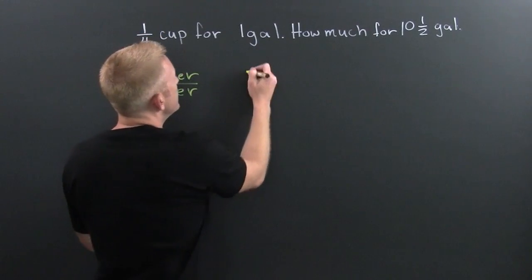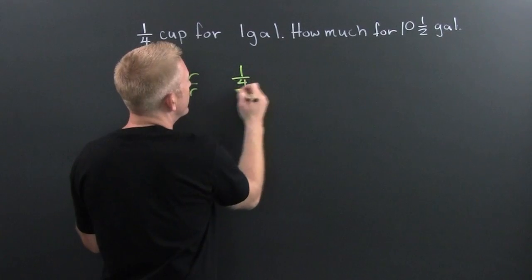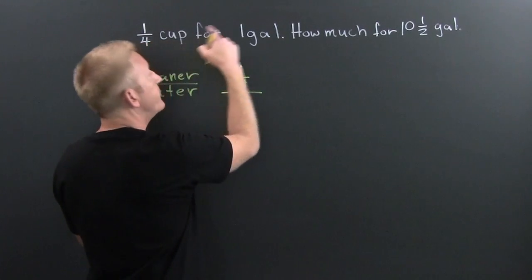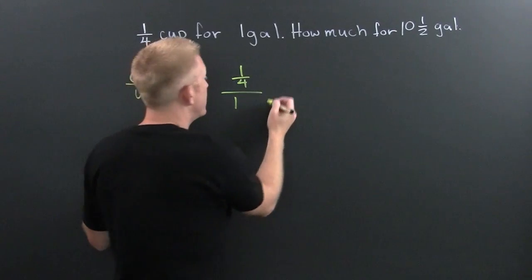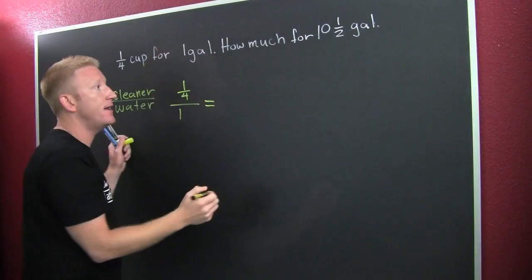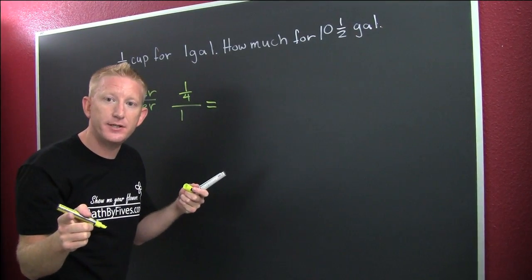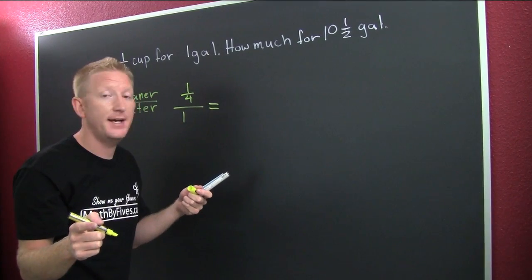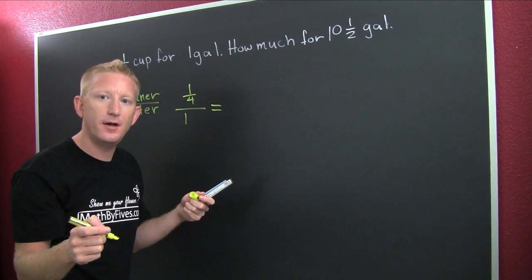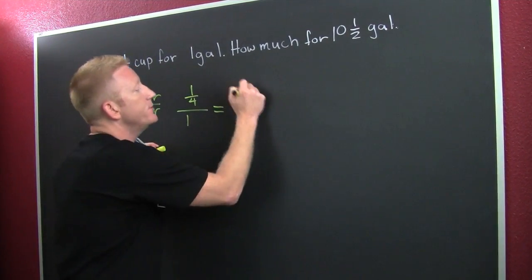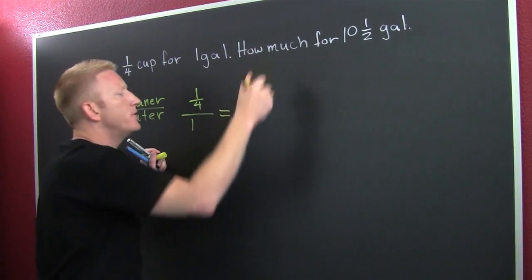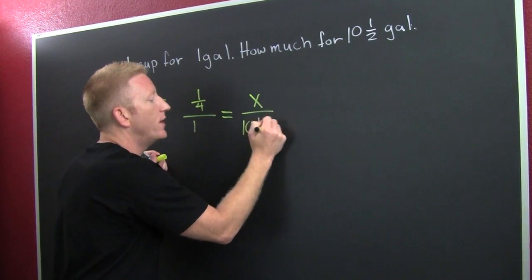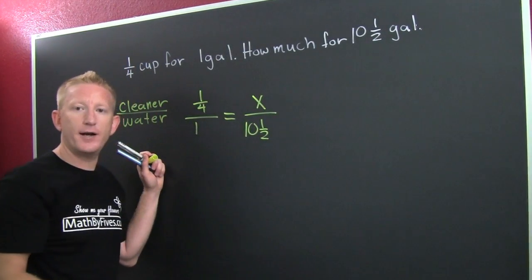This is going to be one-fourth cup of cleaner for one gallon of water. And then, do you know how much cleaner you're going to use for your ten and a half gallons? No. So, use an X. So I put an X right there because that's my unknown quantity.